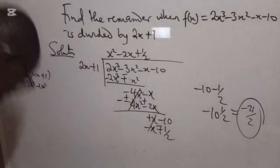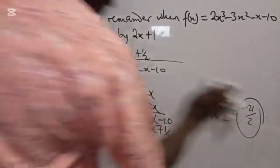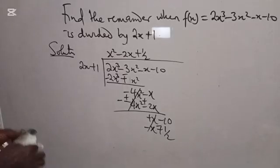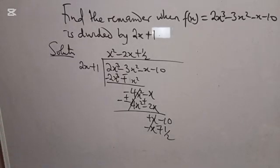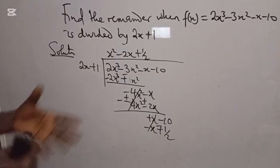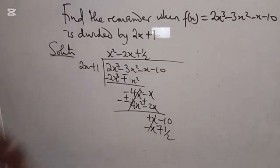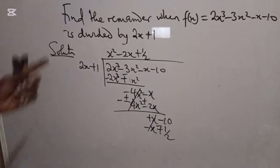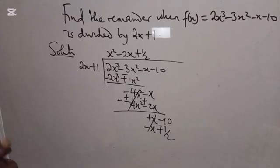So the remainder when f(x) is divided by this divisor is minus 21 over 2. In the next video, we shall talk more on how to find the factors of polynomials, and also when we are given some constants in polynomial functions and we are finding the values of such constants. If you enjoyed this video, please kindly give it a thumbs up, comment, like, and share. God bless you.